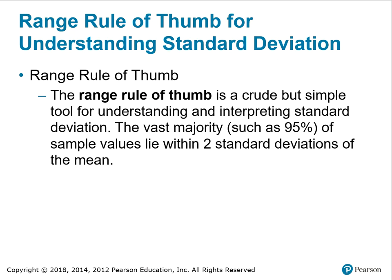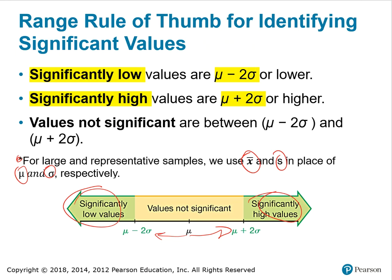The vast majority, such as 95% of sample values, lie within two standard deviations of the mean. Significantly low values are the mean minus two standard deviations or lower. Significantly high values are the mean plus two standard deviations or higher. Values not significant are between the mean minus two standard deviations and the mean plus two standard deviations.